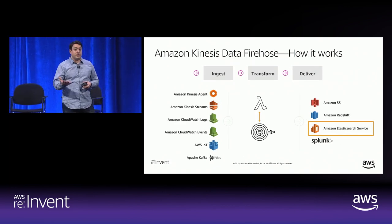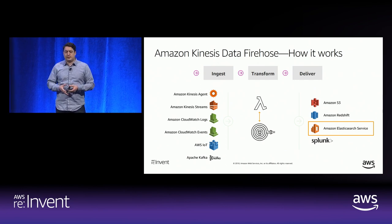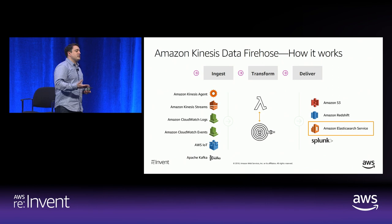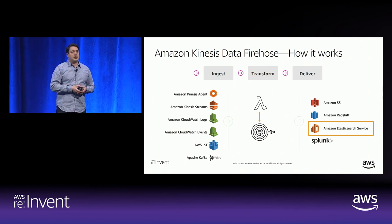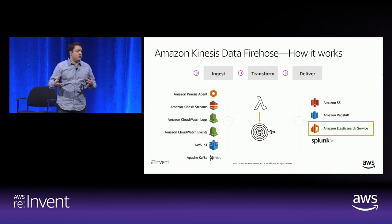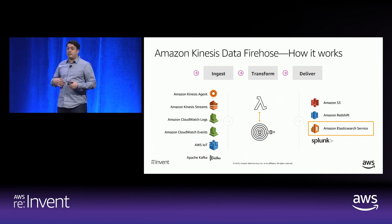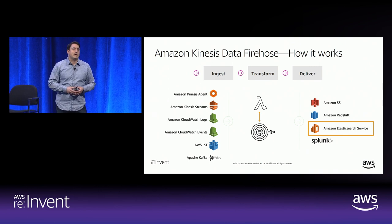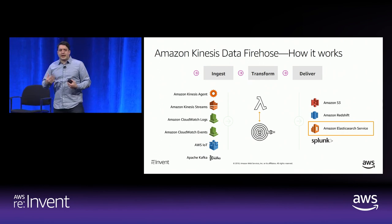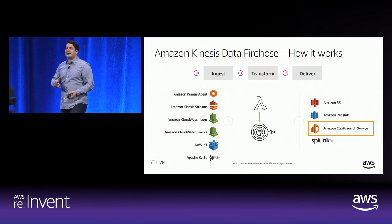Kinesis Data Firehose is primarily about delivery. Ingest mechanisms are similar to Kinesis Data Streams. We have an Apache Kafka connector that will forward data from Kafka to Kinesis Data Firehose, which then delivers to four supported destinations: Amazon S3, Amazon Redshift, Amazon Elasticsearch Service, and Splunk. Along the way, you can do processing — from configuring file sizes in S3 to converting JSON to Parquet format, running ETL scripts via AWS Lambda, compression, and more. For most purposes, Firehose is used as streaming ETL — the goal is to get data to the destination.